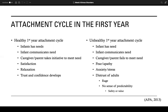For an unhealthy first-year attachment cycle, the infant has a need, the infant communicates that need, but the caregiver or parent fails to meet the needs. The child then develops fear and apathy, starts to feel anxiety and stress, which leads to distress and rage, no sense of predictability, and no sense of safety or value.